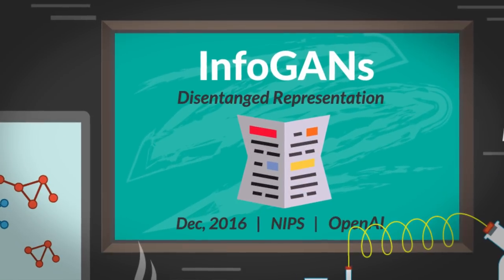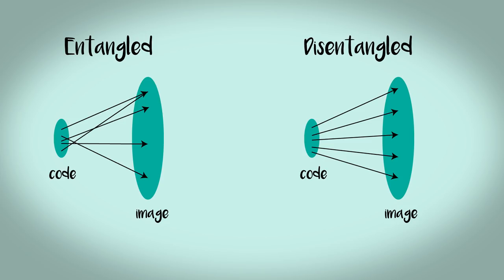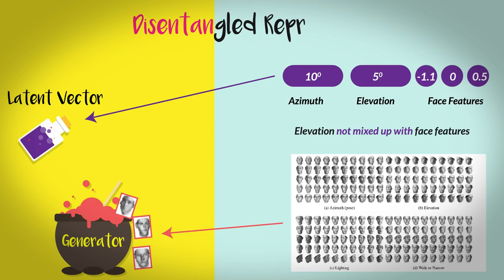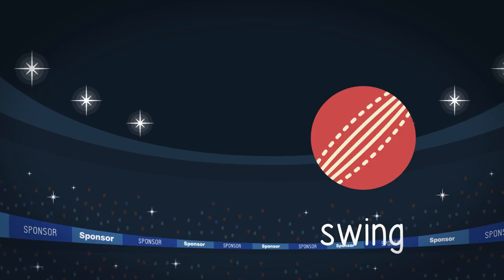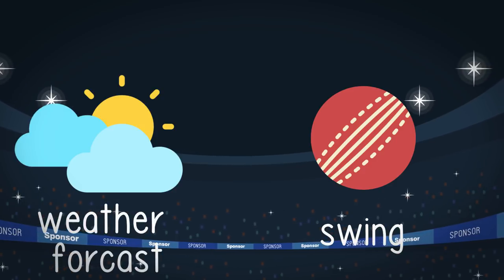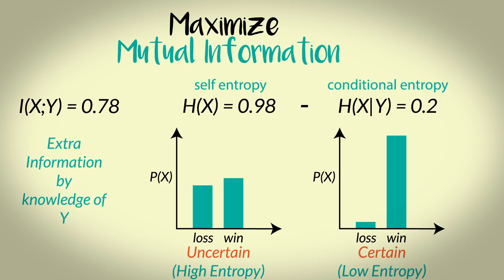First in the list we have InfoGANs, which tries to learn disentangled representation in a completely unsupervised manner. I find this paper really interesting because it rightly applies the concept of mutual information. Now, this mutual information is defined as the amount of extra information learned for X if we know another variable Y. It is like information gained about the swing of the cricket ball based on the knowledge of weather forecast. This is simply self entropy minus conditional entropy. H of X given Y is the amount of confusion or randomness which is eliminated because of the additional knowledge of Y.